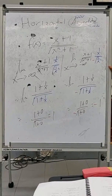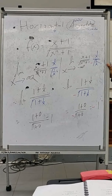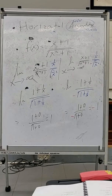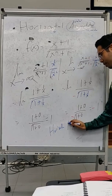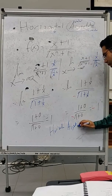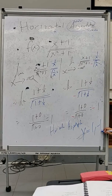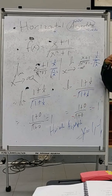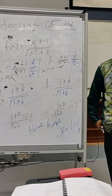Any questions? This is not the final answer — if you end here you lose marks. What should we do? You need to state the horizontal asymptote. We need to check both sides: from the application of x approaching infinity we got 1, and from x approaching negative infinity we got negative 1. So the horizontal asymptotes are y equals 1 and y equals negative 1.